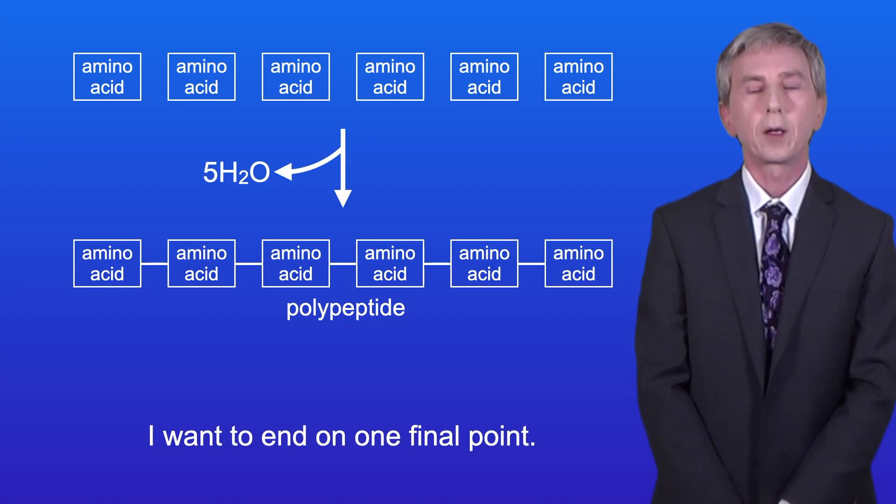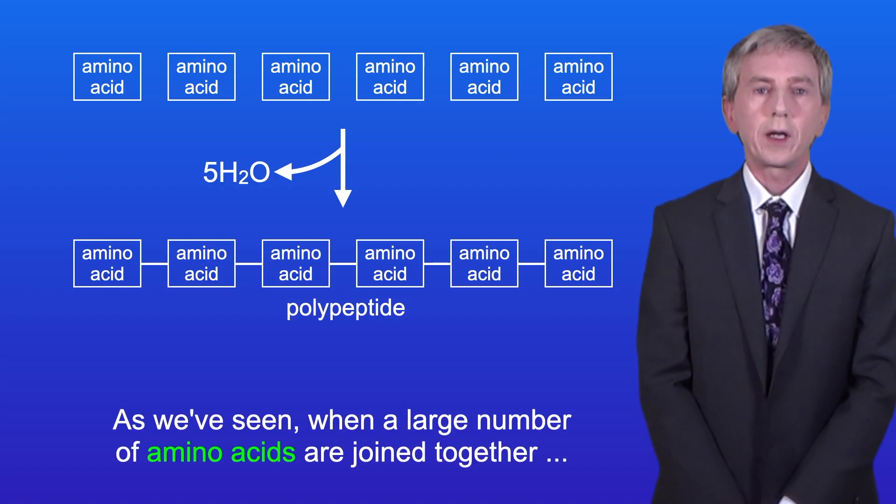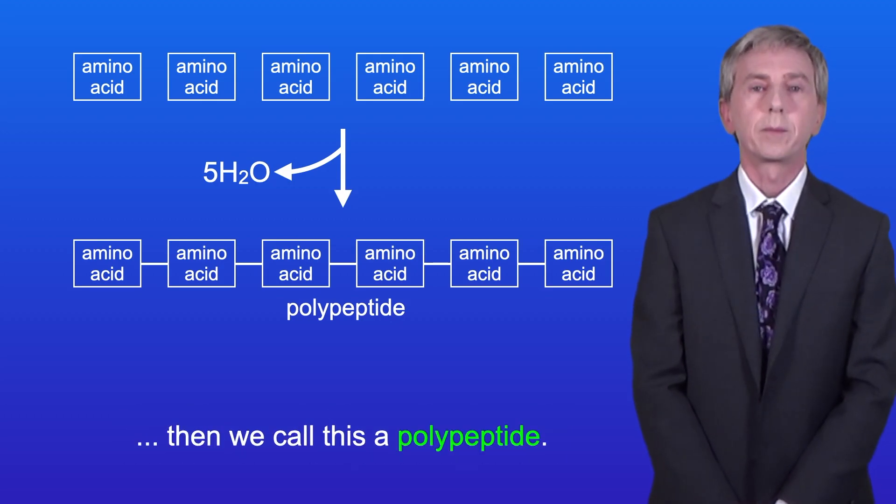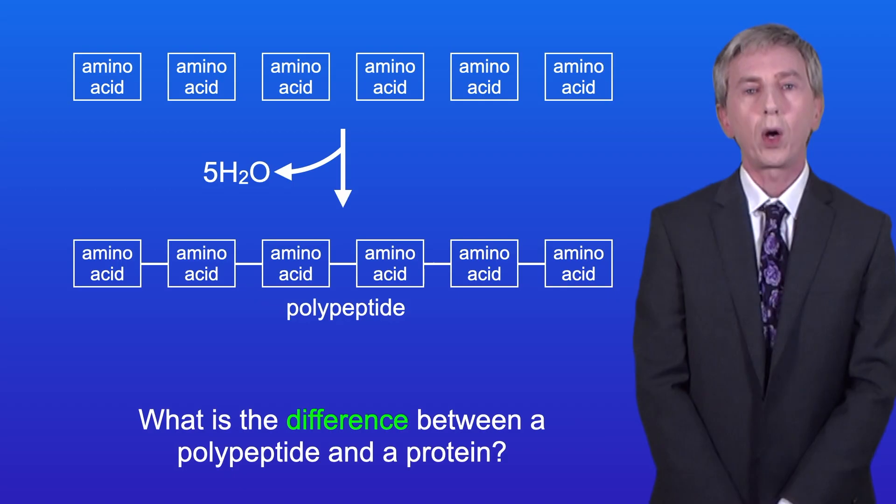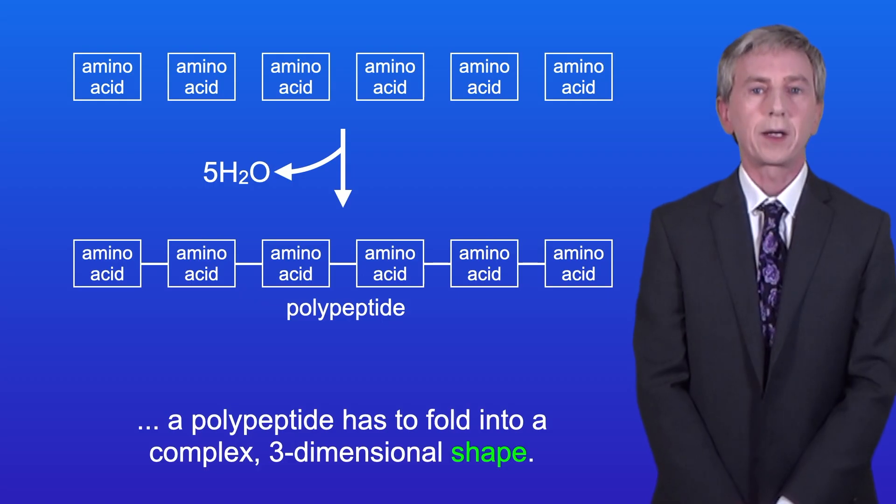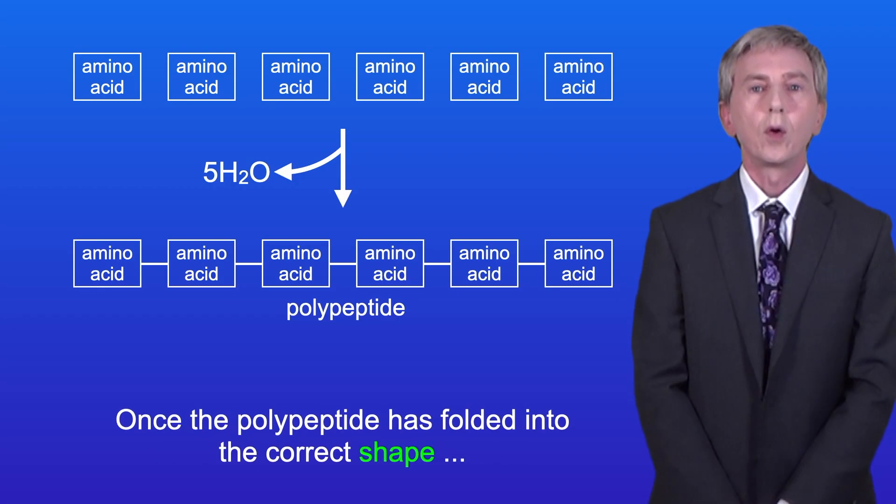I want to end on one final point. As we've seen, when a large number of amino acids are joined together, then we call this a polypeptide. So what's the difference between a polypeptide and a protein? In order to be classed as a protein, a polypeptide has to fold into a complex three-dimensional shape.